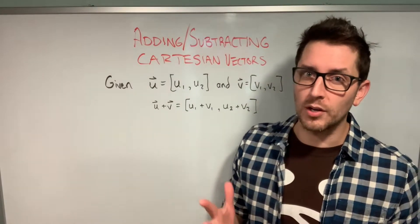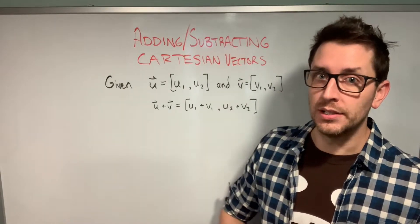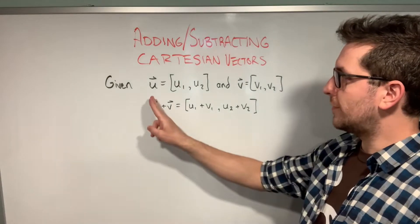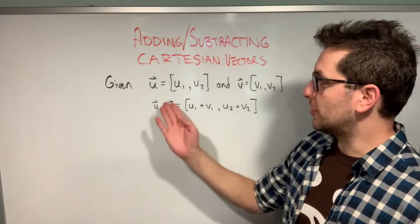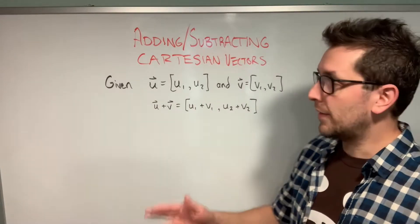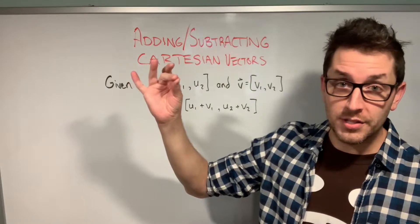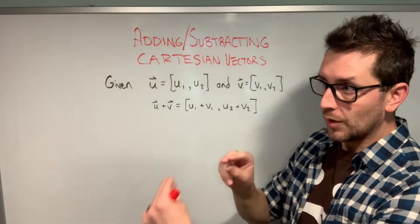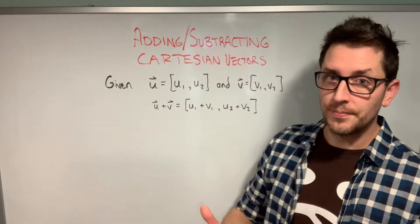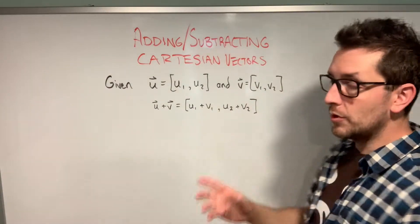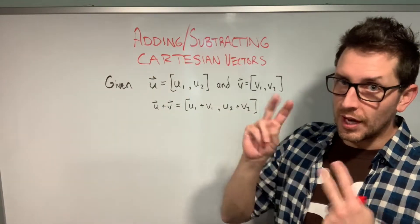Let's start with a basic overview of how to add and subtract Cartesian vectors algebraically. We'll look at two vectors, vector U and vector V. Vector U is defined by coordinates U1 and U2 — picture a point on a Cartesian plane and connect the origin to that point to form vector U. The same is true for vector V: take the point V1, V2 and draw a vector from the origin to that point.